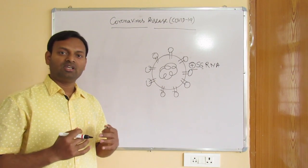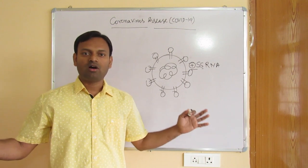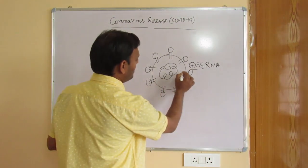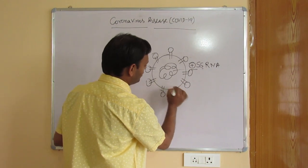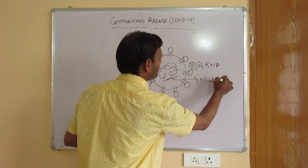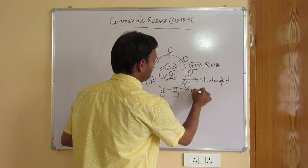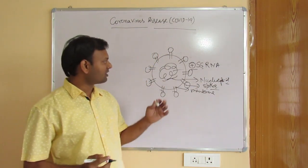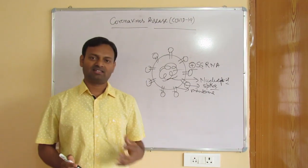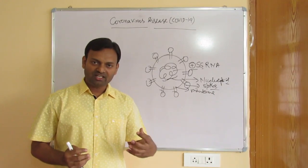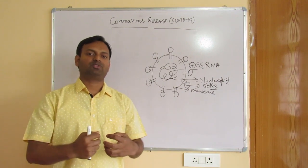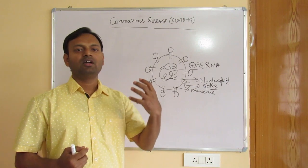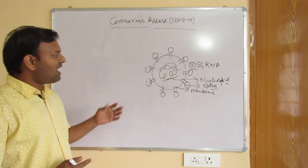That is the benefit of the positive sense strand — it can very quickly replicate within the host system, which is why this disease is spreading so fast among people. Looking at the virus structure, we have the nucleocapsid protein, the membrane protein, and the spike proteins. The spike proteins are very important because they are responsible for interactions with human cells, helping the virus enter, after which it replicates using host proteins and spreads throughout the body.